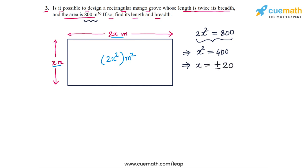So the root that works for us in this case is x equal to plus 20. So if we take that, we get the breadth of the rectangular region as 20 meters. And we get the length of this rectangular region as 40 meters. And for this rectangular region, the length is twice the breadth and the area is 800 meters square.